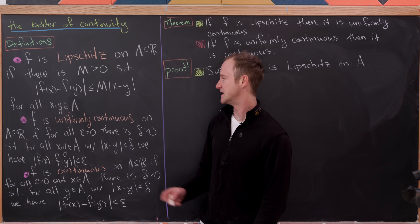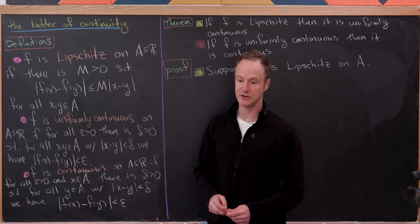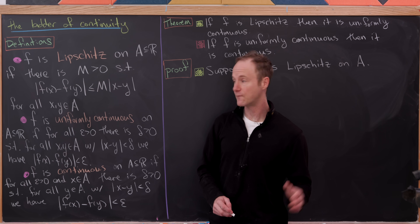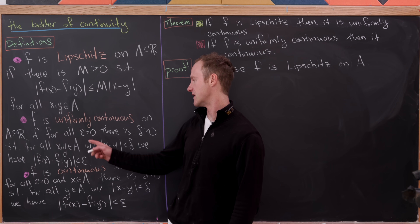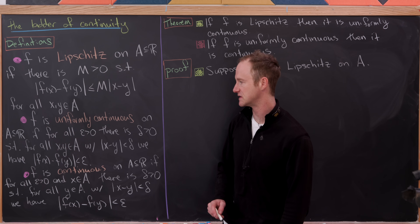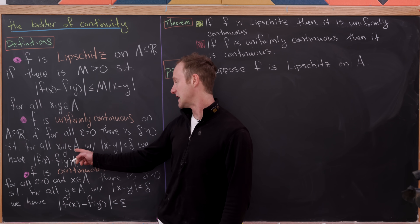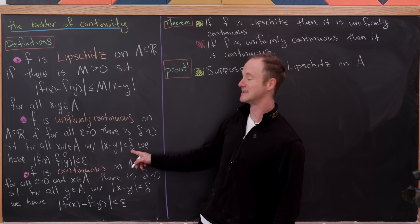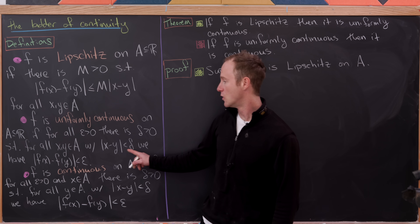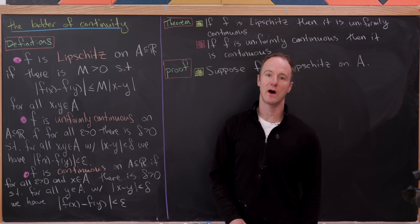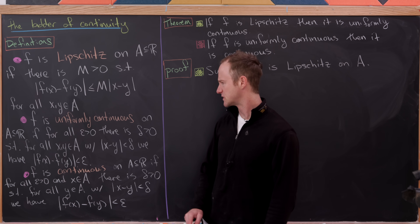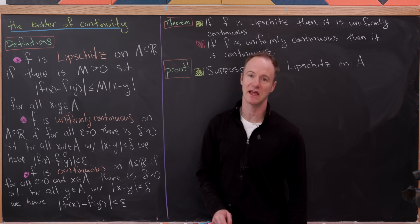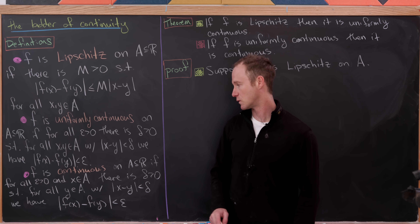Next, we'll say that f is uniformly continuous — that's the next level down. f is uniformly continuous on A if for all epsilon greater than zero, there exists a delta greater than zero such that for any x, y in A with the absolute value of x minus y less than delta, we have the absolute value of f(x) minus f(y) less than epsilon. Observe that this delta was chosen before we decided what x and y are, so it's independent of x and y.